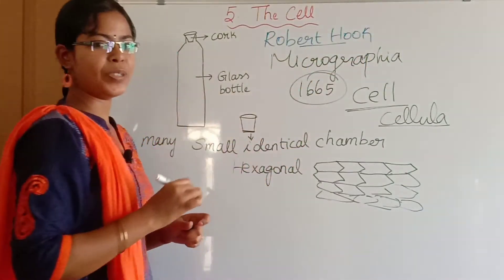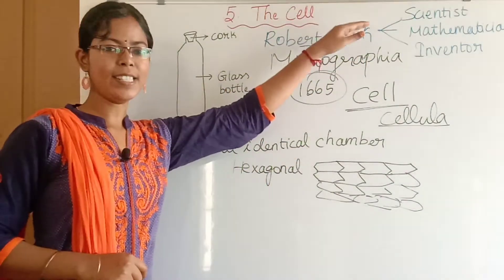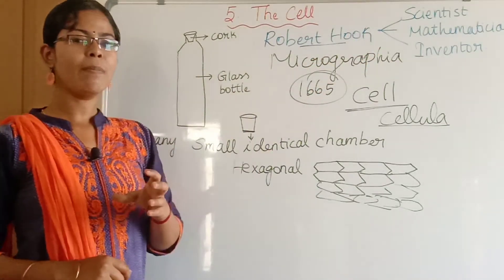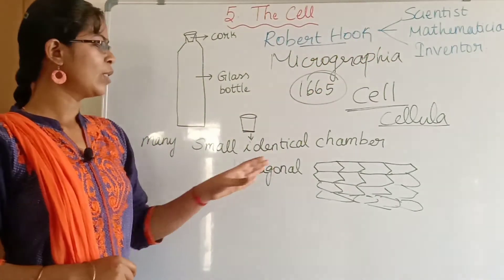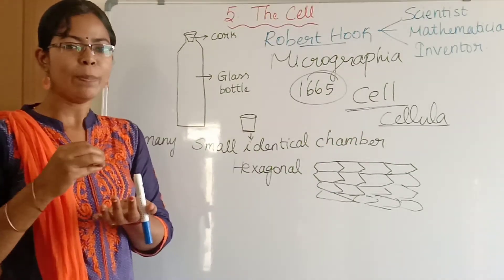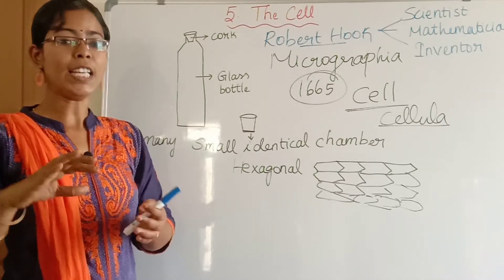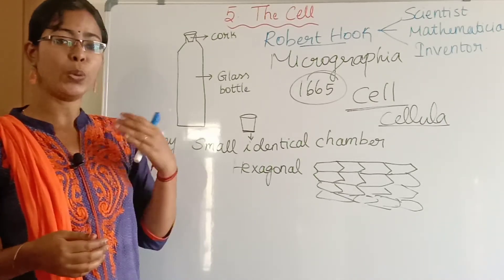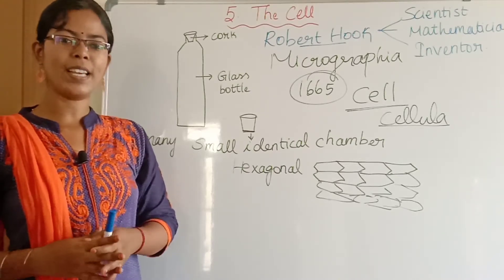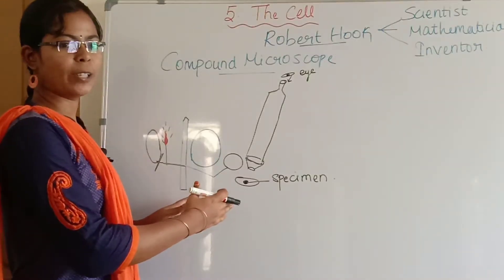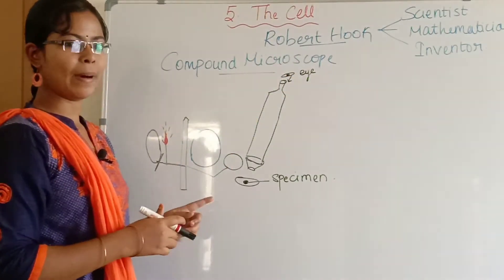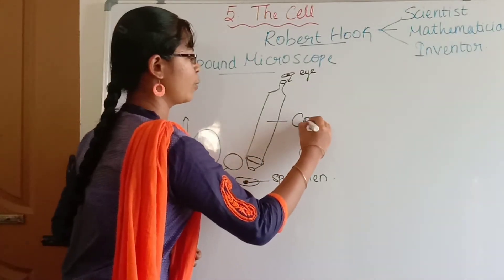This person who discovered the cell was Robert Hooke. Robert Hooke was an Englishman — he was a scientist, a mathematician, and an inventor. With a small microscope, he improved the microscope which was used in those days and developed a compound microscope. This compound microscope was discovered by Robert Hooke.